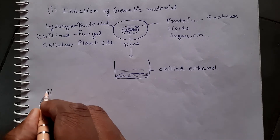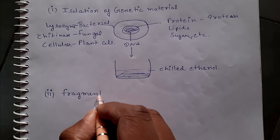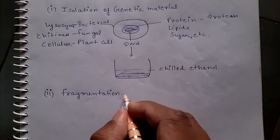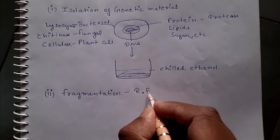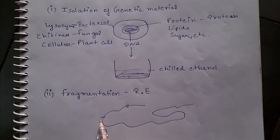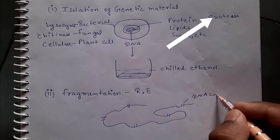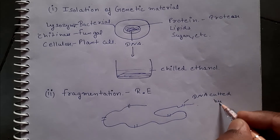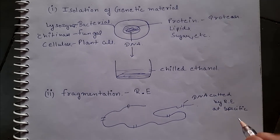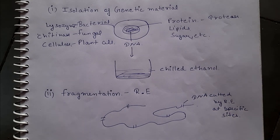Now that we have isolated the DNA, we have to cut it at specific sites to identify the desired DNA. For this purpose we use restriction enzymes. Restriction enzymes cut the DNA at specific sites, and the same restriction enzyme is also used to cut the vectors.